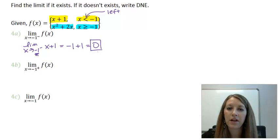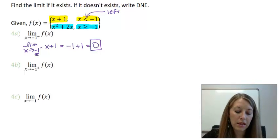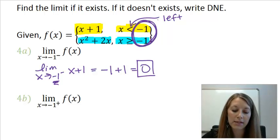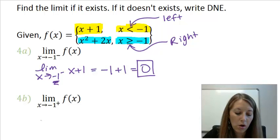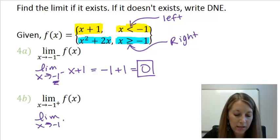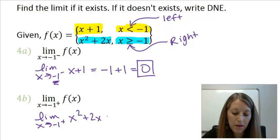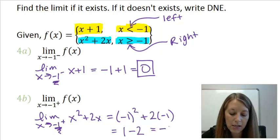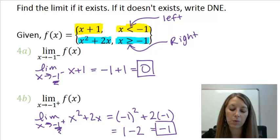I suggest you pause the video to try Parts B and C on your own. For Part B, we're looking at the limit as x approaches negative 1 from the right. Since we want the right-hand side — values larger than negative 1 — we use the blue function, x squared plus 2x. Substituting x equals negative 1 gives negative 1 squared plus 2 times negative 1, which is 1 minus 2, giving a limit of negative 1.